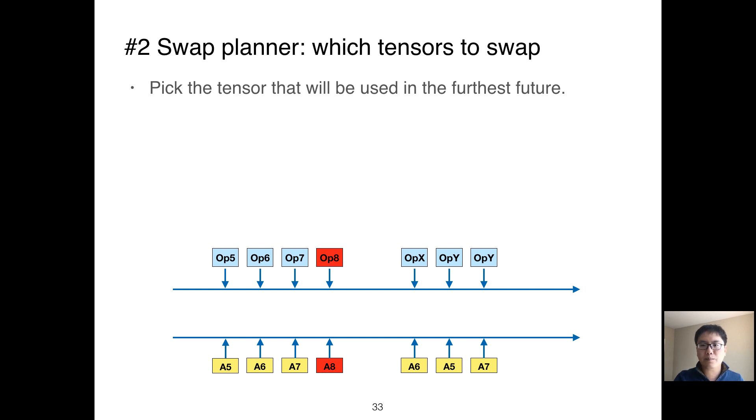In this example, we don't have enough memory space for A8. Which tensor should we choose? As A7 will not be used in the longest period, we should pick A7. This strategy is not always optimal for our setting. If we pick A7, we may lose the chance to overlap the swapping with computation.